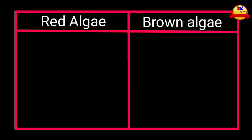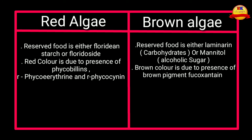Differences between red algae and brown algae: Red algae reserve food is either floridean starch or floridoside. Brown algae reserve food is either laminarin, which is a carbohydrate, or mannitol, which is an alcoholic sugar. Red algae color is due to the presence of phycobilins — phycoerythrin and phycocyanin. Brown algae color is due to the presence of the pigment fucoxanthin, with the formula C40H56O6.